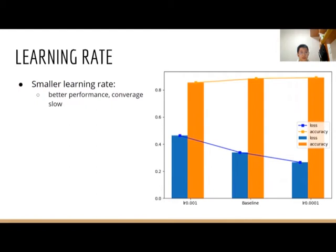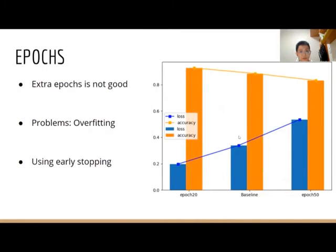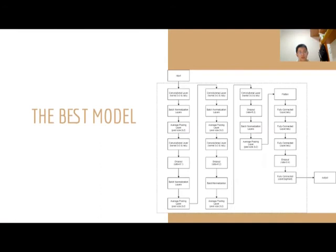We also try some different learning rates. We find that smaller learning rates can yield better performance, but the model needs to converge more slowly. The performance is not affected much by the learning rate, so we think our baseline learning rate is good enough. We also do some experiments about epochs. We find that after the model is converged, extra epochs lead to worse performance because it leads to overfitting problems. In order to solve these problems, we think we can use early stopping methods to stop training when the model has converged.